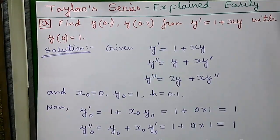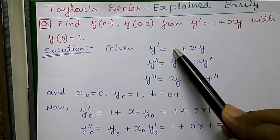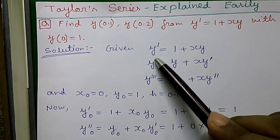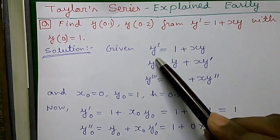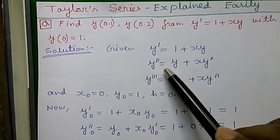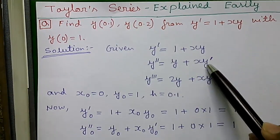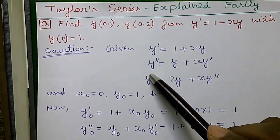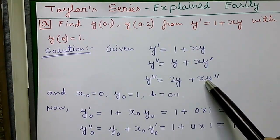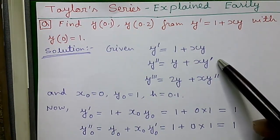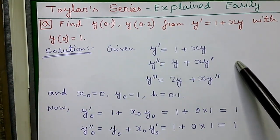So let's proceed to the solution. Given y' = 1 + xy. Next if we differentiate it with respect to x you will get y'' = y + xy'. Differentiating again you will get y''' = 2y' + xy''. That means in each step we will use previous step's value, that's why it will become more accurate.